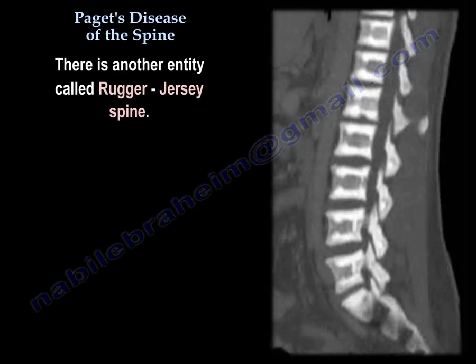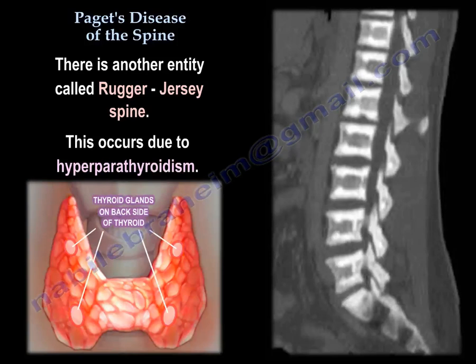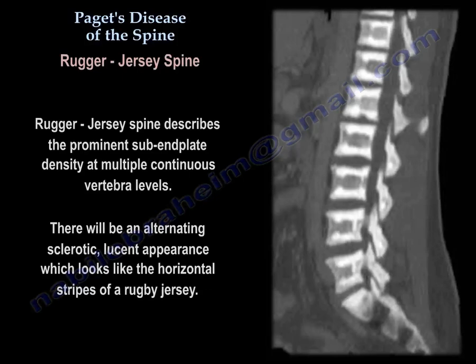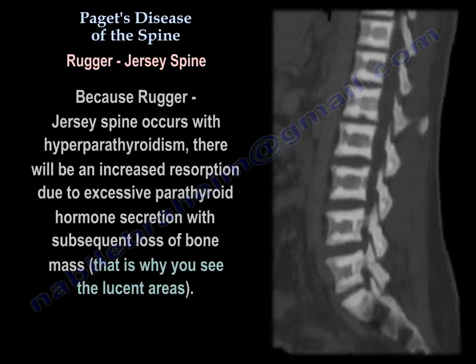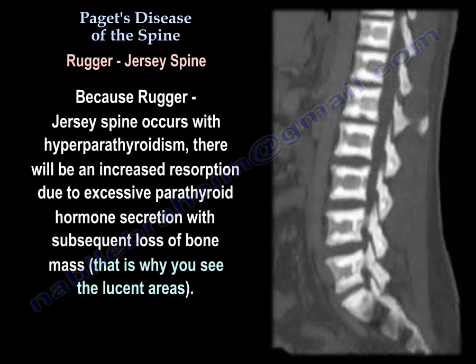There is another entity called rugger jersey spine, which occurs due to hyperparathyroidism. It describes the prominent sub-endplate density at multiple contiguous vertebral levels, with an alternating sclerotic-lucent appearance that looks like the horizontal stripes of a rugby jersey. Because it occurs with hyperparathyroidism, there will be increased resorption due to excessive parathyroid hormone secretion with subsequent loss of bone mass.